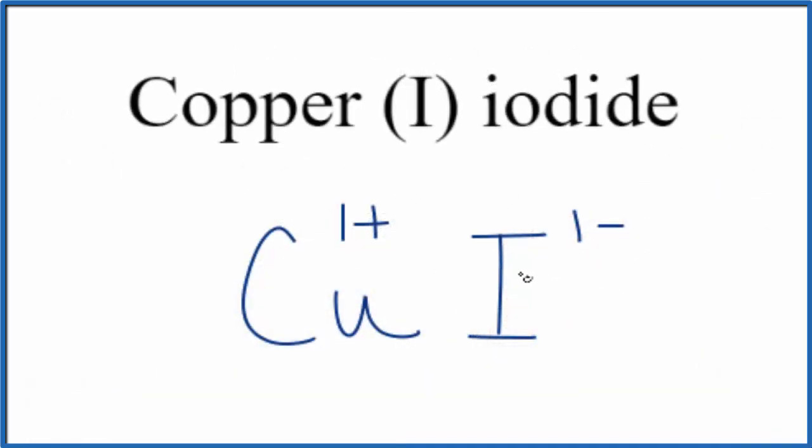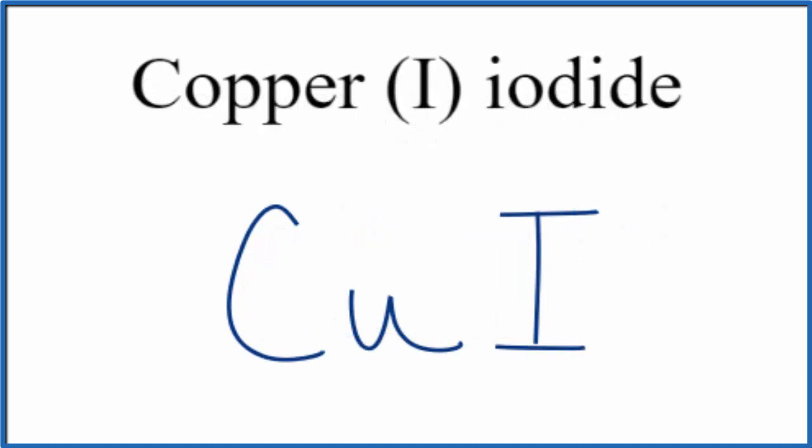So the formula for copper one iodide is just CuI. Let me clean it up a bit. There you have it, the formula for copper one iodide, CuI. This is Dr. B, thanks for watching.